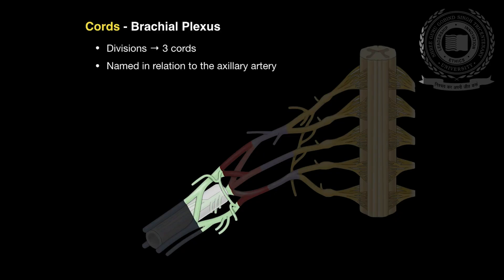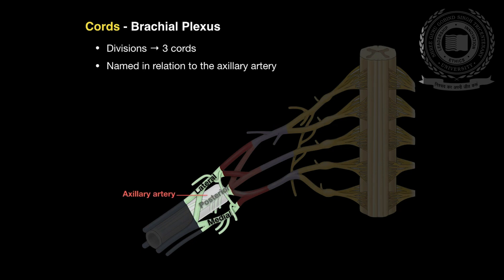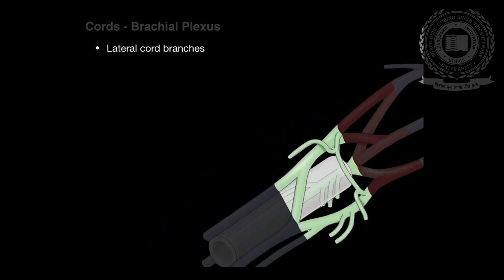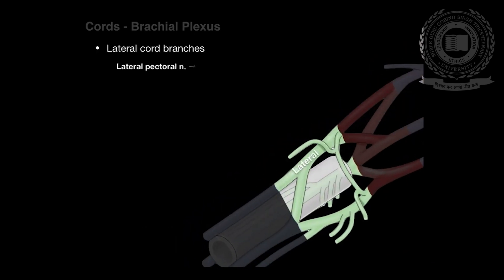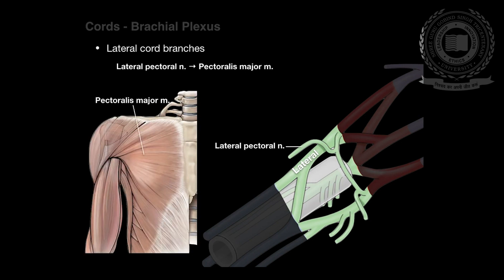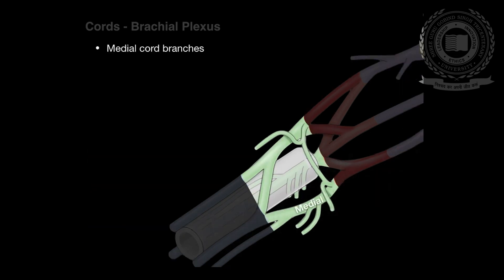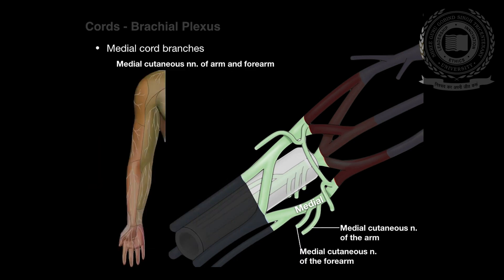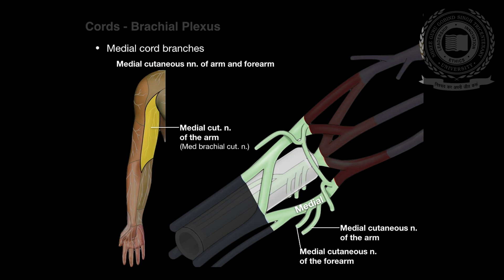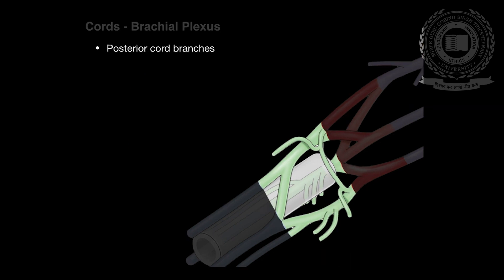Cords: the cords are referred to as lateral, posterior, and medial cord according to their relationship with the axillary artery. The cords pass over the first rib close to the dome of the lung and continue under the clavicle, immediately posterior to the subclavian artery. The anterior divisions of the upper and middle trunks unite to form the lateral cord, which is the origin of the lateral pectoral nerve. The anterior division of the lower trunk forms the medial cord, which gives off the medial pectoral nerve, the medial brachial cutaneous nerve, and the medial antebrachial cutaneous nerve. The posterior divisions from each of the three trunks unite to form the posterior cord.